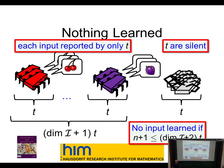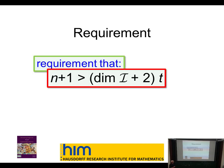I can learn nothing if the number of processes is less than or equal to 2 plus the dimension of inputs multiplied by t. This is where our dimensional requirement comes from — none of this is true if you only have crash failures. With crash failures, if you hear a value you know it's a correct value; the only thing you worry about is maybe you don't hear a value.